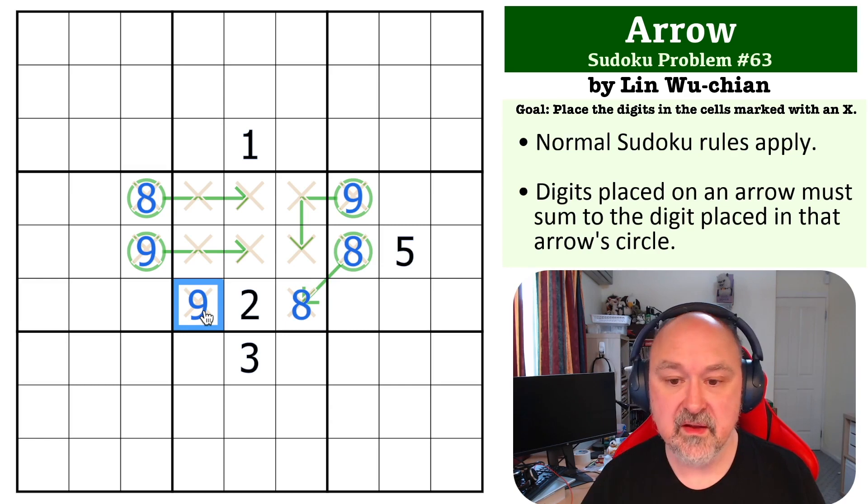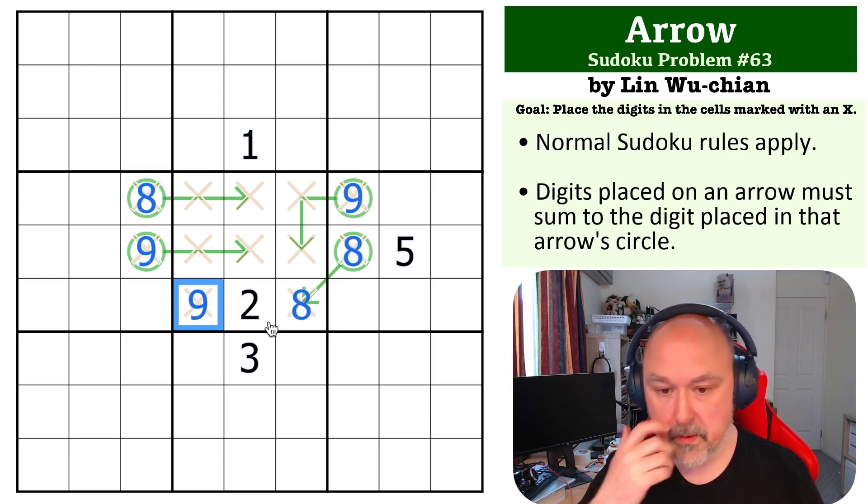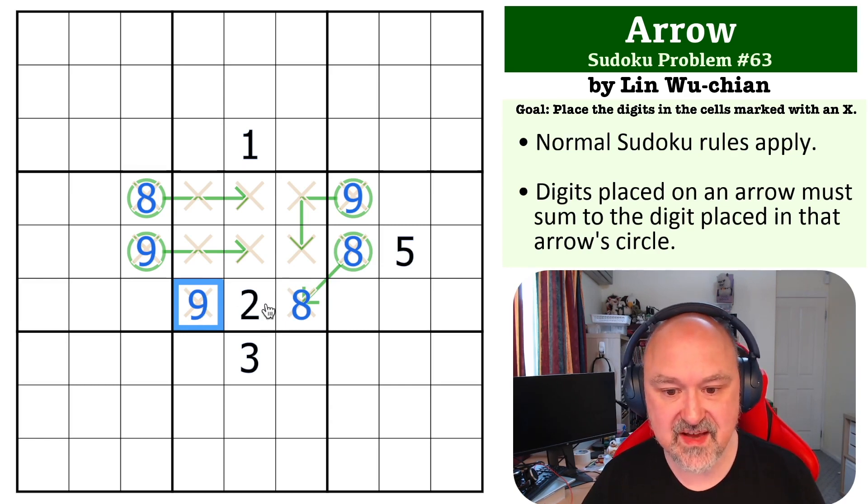Now the question you want to ask yourself is where does the seven go? Well, the seven can't go on a two-cell arrow because it would have to go with a two and there's no two available. So the seven goes on here as a one-seven, and this tells us this is the seven and this is the one.